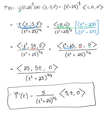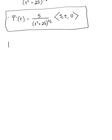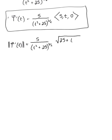Now that we have the derivative of the unit tangent vector, we find its length. By the scalar multiple property, we keep the scalar out front: 5 over (t² + 25)^(3/2), times the square root of 25 + t² + 0. The square root of t² + 25 in the numerator and the (t² + 25)^(3/2) in the denominator simplify, leaving us with 5 divided by (t² + 25).